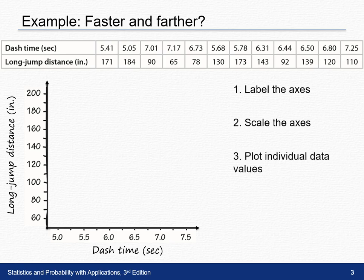Then we need to begin plotting the individual data points, beginning with the point 5.41 with a long jump distance of 171. Going on to the next point, a dash time of 5.05 seconds and a long jump distance of 184 inches. We're going to continue to plot these points one at a time and you should see a pattern appear.